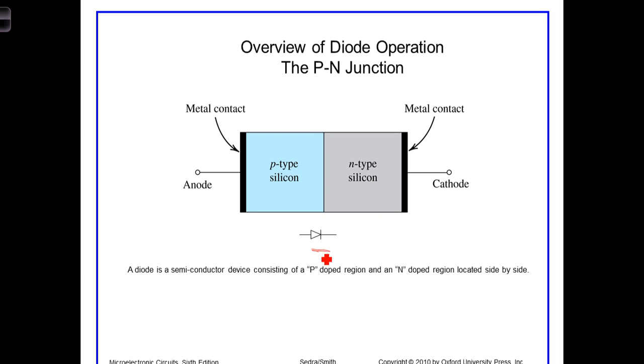This is the schematic symbol of a diode. Diodes only conduct substantial amounts of current in one direction, the direction that the arrowhead is pointing. For historical reasons, the terminals are referred to as the anode and the cathode.